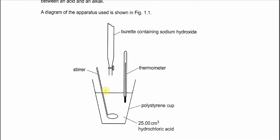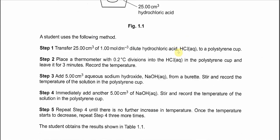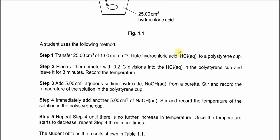We put the acid in the polystyrene cup and titrate with the sodium hydroxide solution. In step one, we put the acid solution in the cup with this volume and concentration. After that, we put the thermometer with 0.2 degrees C division into the acid and record the temperature, which we'll use for calculations of the percentage error.